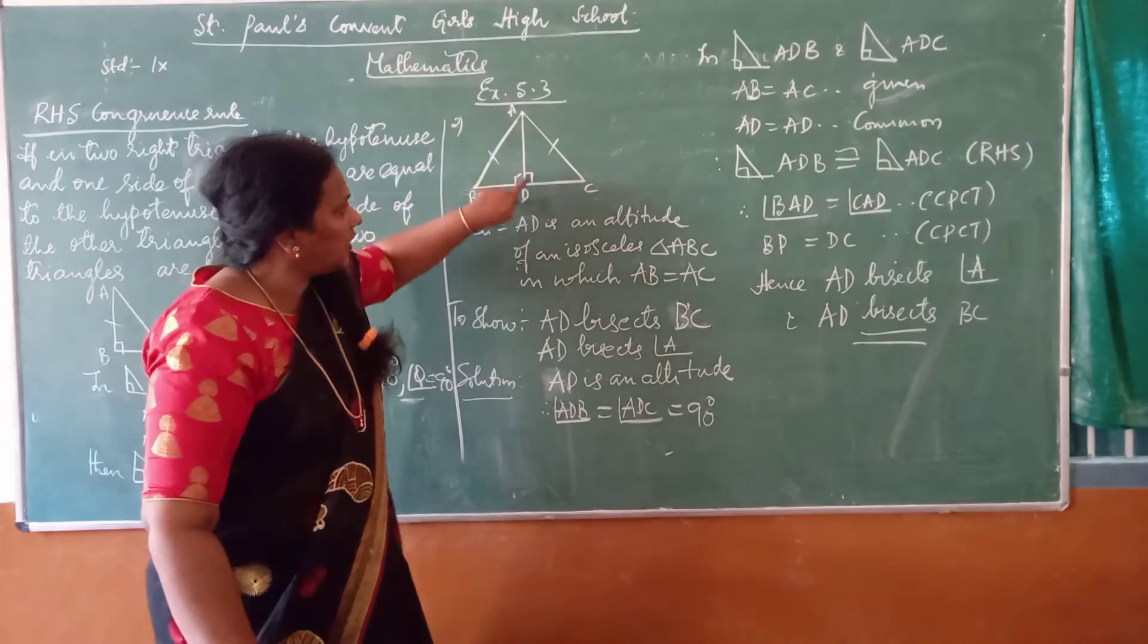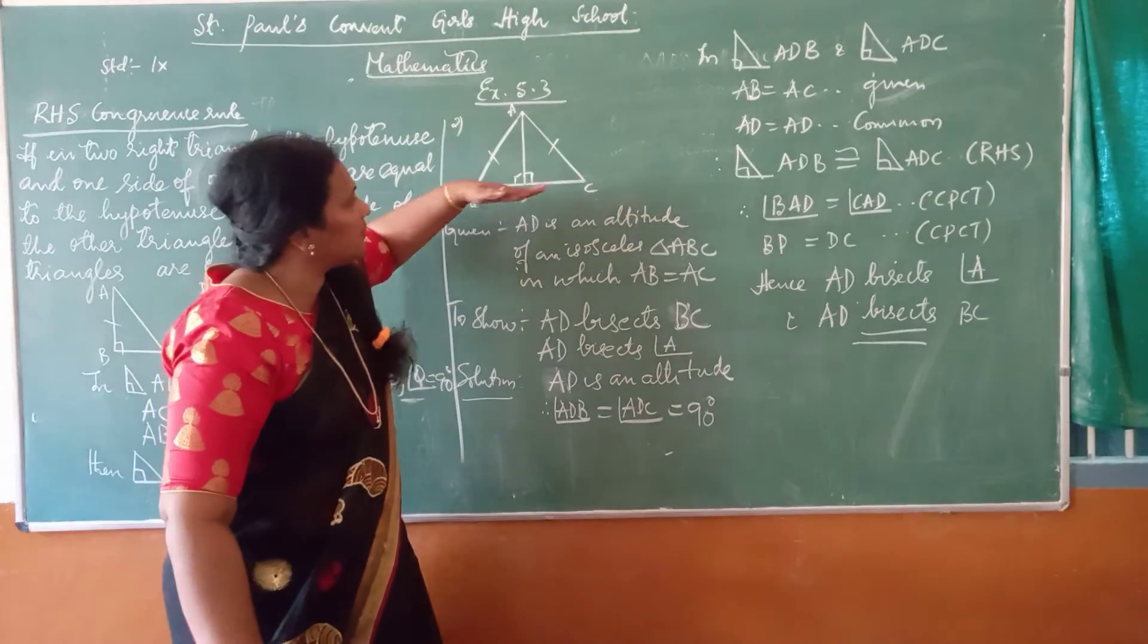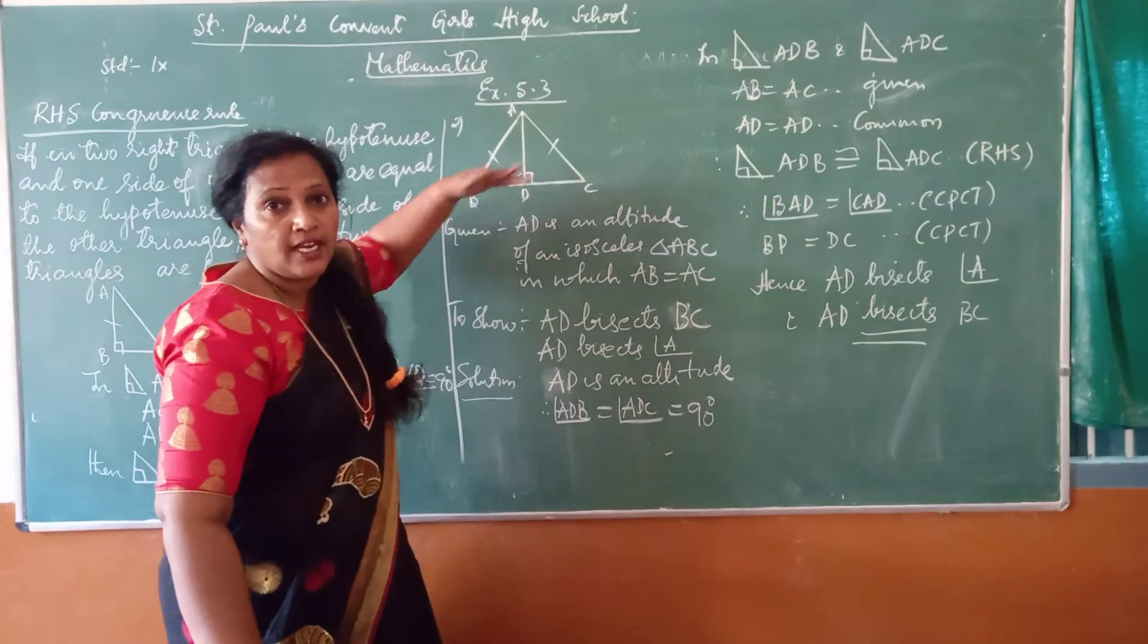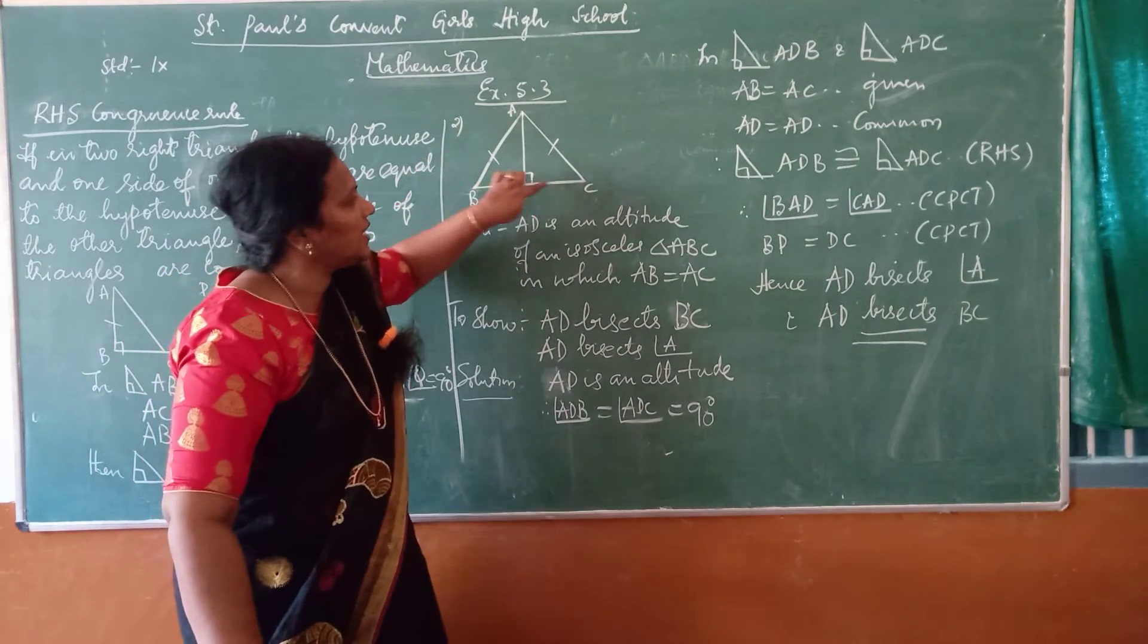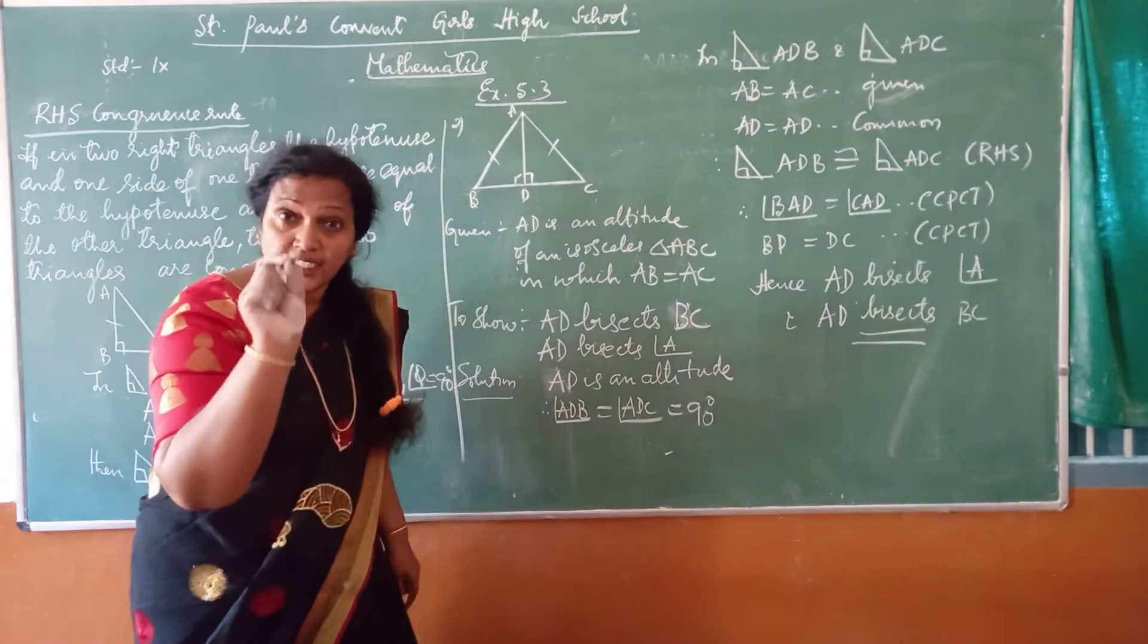So this height altitude will be always perpendicular to the base. It means that angle ADB will be equal to angle ADC will be equal to how much? 90 degrees.